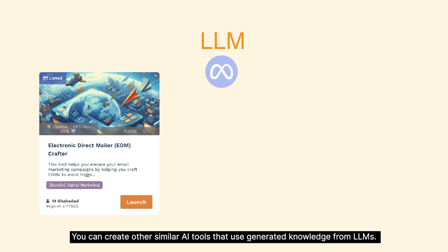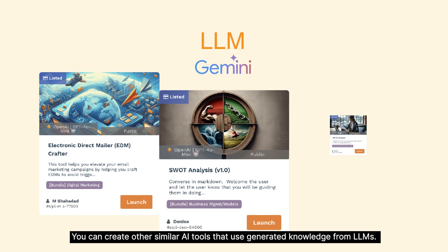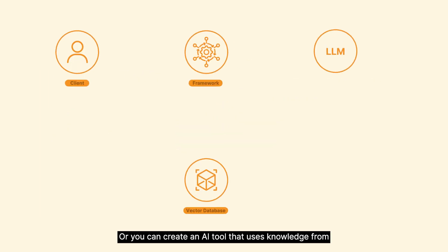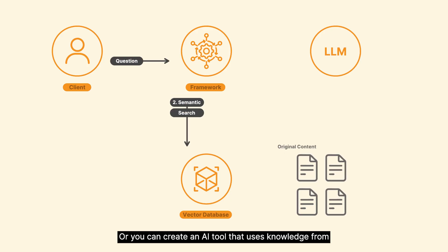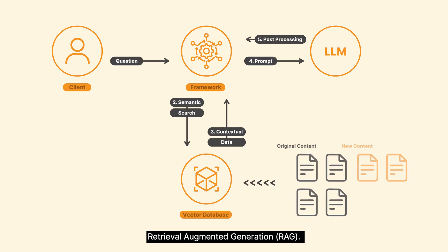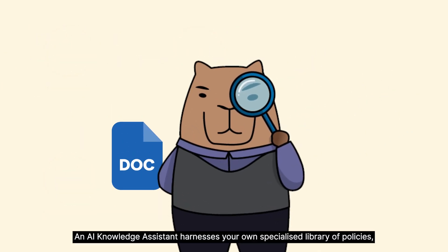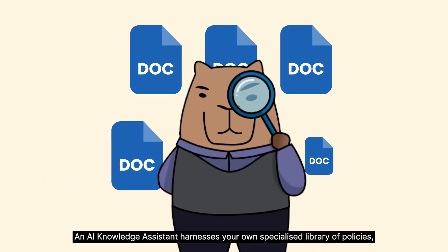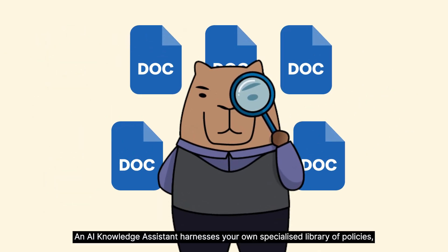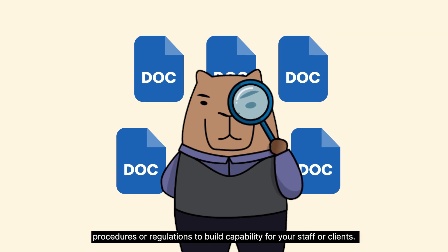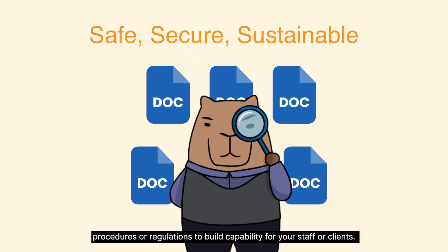You can create other similar AI tools that use generated knowledge from OLMs, or you can create an AI tool that uses knowledge from retrieval augmented generation. We call this an AI Knowledge Assistant. An AI Knowledge Assistant harnesses your own specialized library of policies, procedures, or regulations to build capability for your staff or clients.